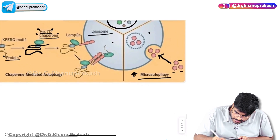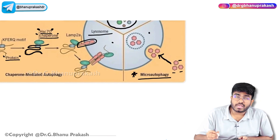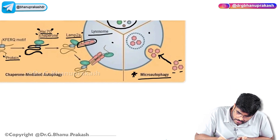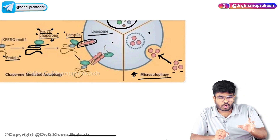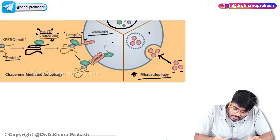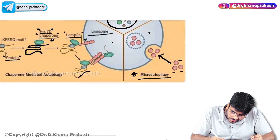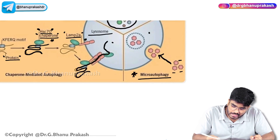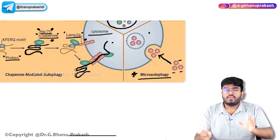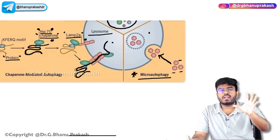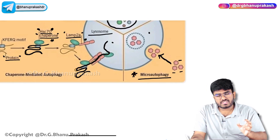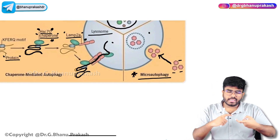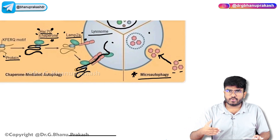On the lysosome, there is a molecule called LAMP2A. This LAMP2A is going to bind with the HSC70 chaperone. Only when the chaperone binds with LAMP2A will the lysosomes allow this protein to enter. It's just like an ID card. Whenever there is a protein coated with this chaperone, the chaperone directs the proteins into the lysosomes. LAMP2A recognizes that the chaperone is taking the protein and allows the protein into the lysosomes, where it is broken down for the release of energy.